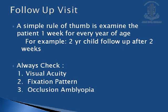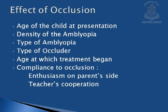Regarding follow-up once therapy has started: for full-time occlusion, the simple rule is to examine the patient 1 week for every year of age — meaning a 2-year-old child should be followed after 2 weeks. At every follow-up visit, always check visual acuity, fixation pattern, and the development of occlusion amblyopia. The effect of occlusion therapy depends on the age of presentation, density of amblyopia, type of amblyopia, type of occluder used, age at which treatment begins, and most importantly, compliance with therapy — including enthusiasm on the parents' side and teacher's cooperation.